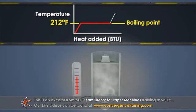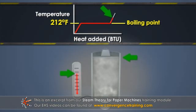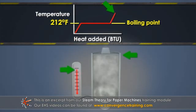Once all of the liquid water in a system has turned to vapor or evaporated, the temperature will resume its increase as more heat is added. Steam at a temperature above its boiling point is called superheated steam.